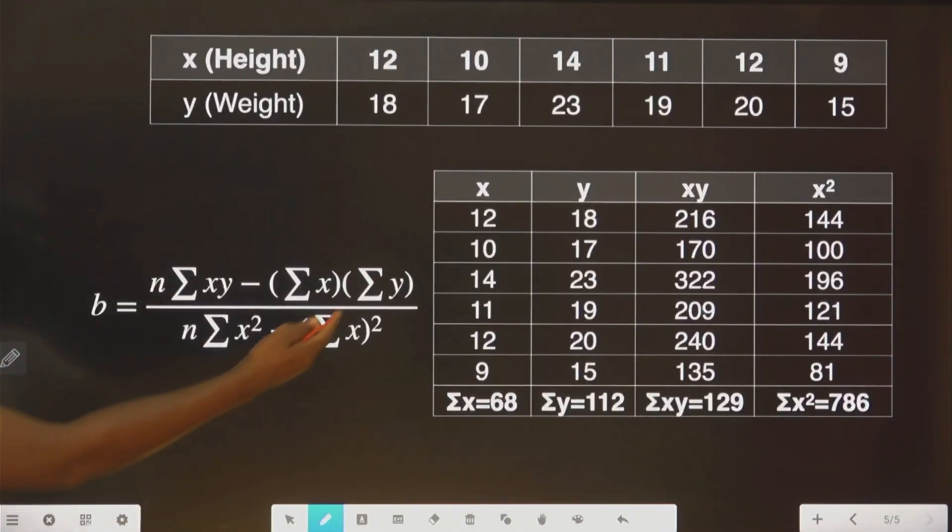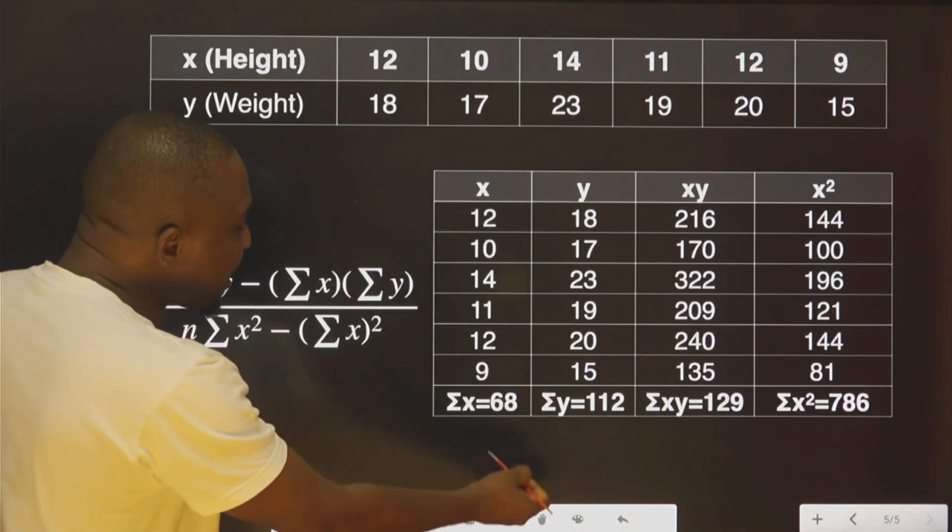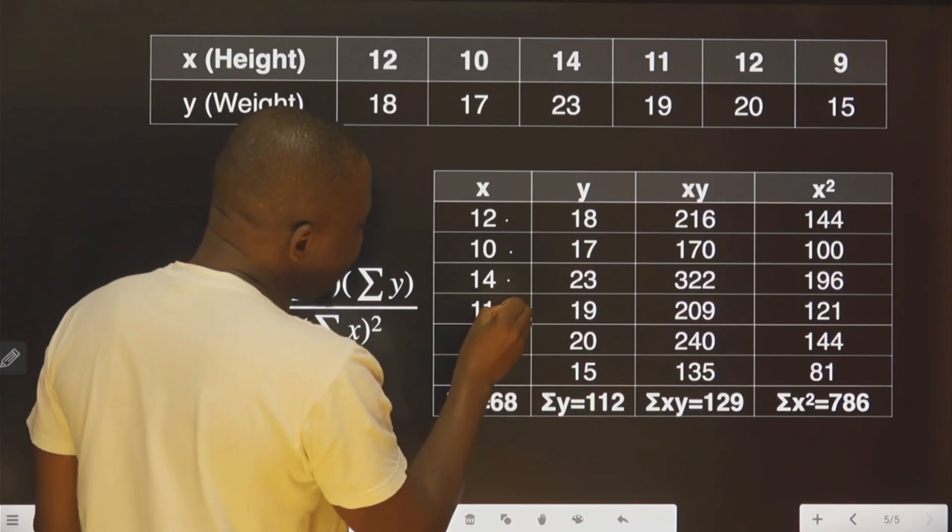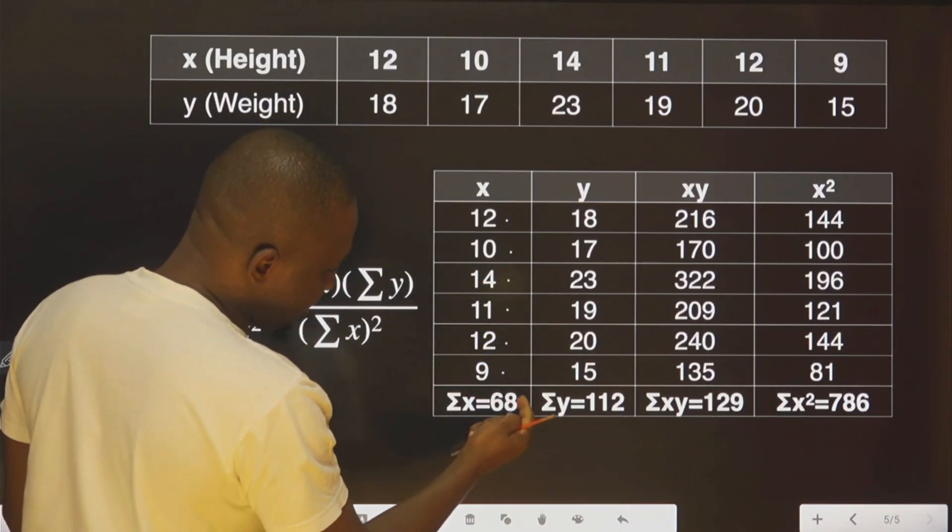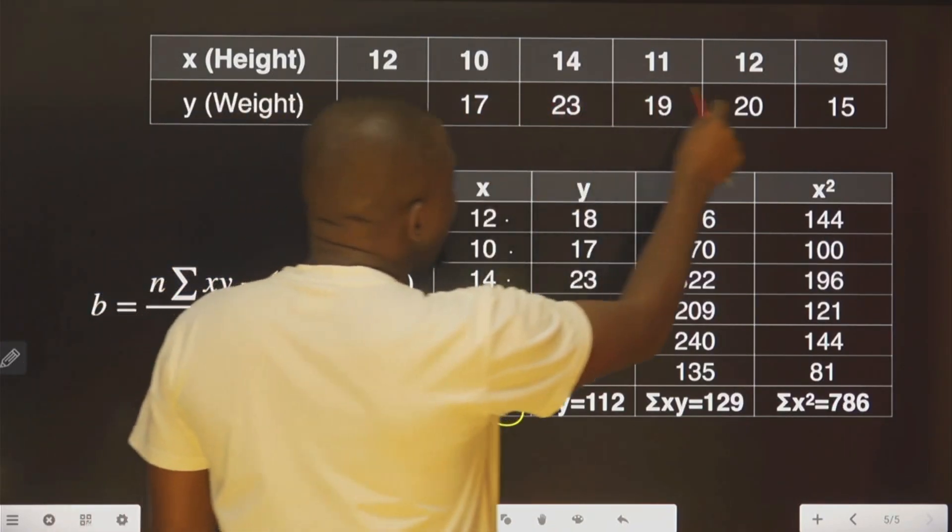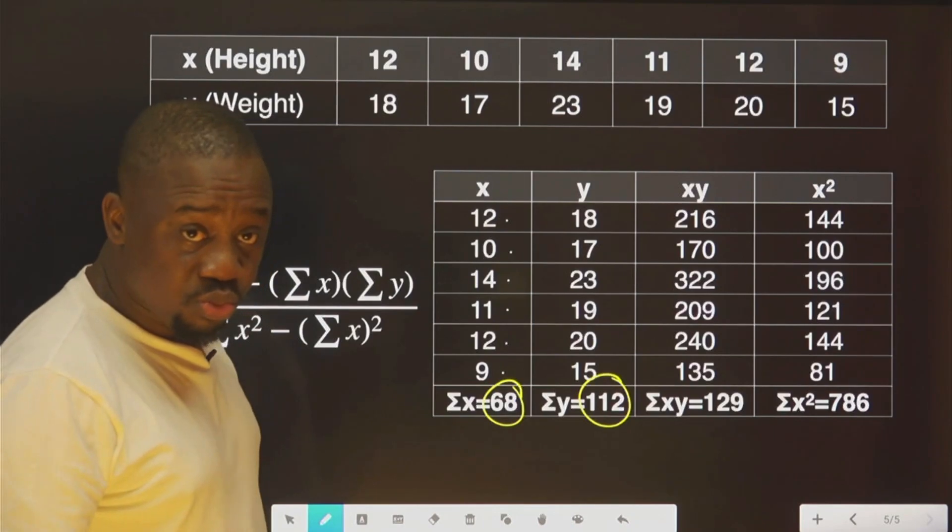This is the formula I explained to you just now. Now this is the original question. As you can see, these are all the x. If you add this, this, this, this, you get 68. This one too, if you add them, you have 112.